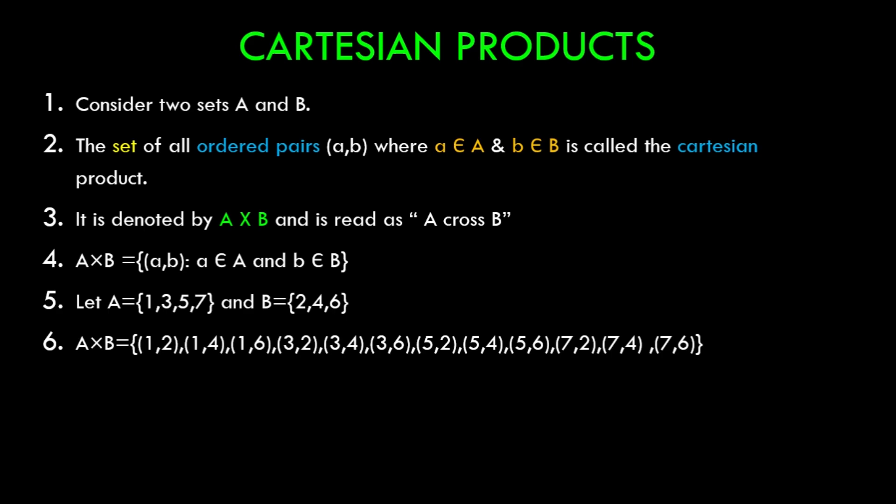Here's an example. We can see that there is a set A which has {1,3,5,7} and we have a set B which has {2,4,6}. We have calculated the Cartesian product of the two sets, that is A×B, and you can see all the first elements in the pair are from set A and the second elements in the pair are from set B.